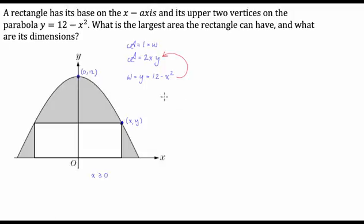And that will give us the area of the rectangle in terms of one variable x, which is equal to 2x times 12 minus x squared. We'll fix that up a little bit, that's equal to 2 times 12 which is 24x minus 2x cubed. So now that we have the area of our rectangle in terms of one variable x, we're going to differentiate this.